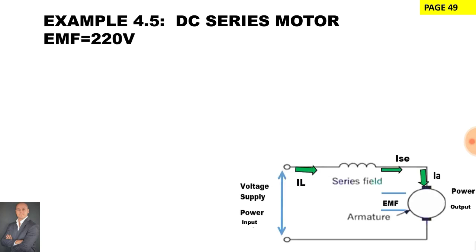Now in this calculation the generated EMF is 220 volts. The armature resistance is 0.22 ohms. The supply current being drawn by the armature is 35 amps and this current will be the same throughout the circuit.